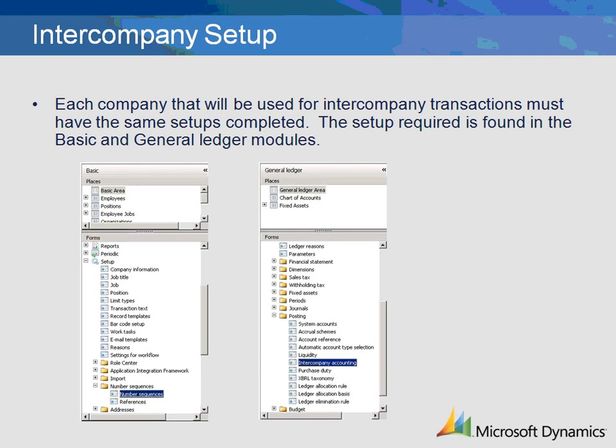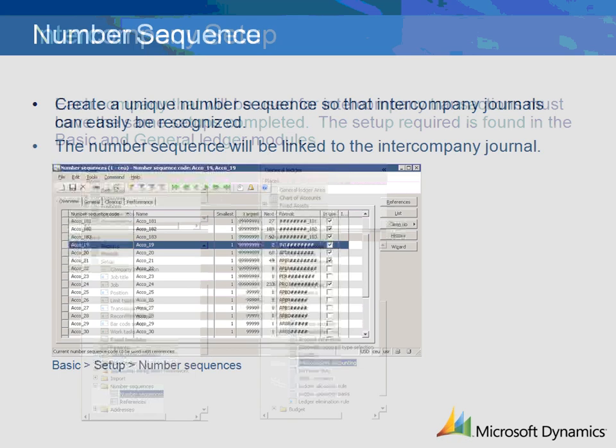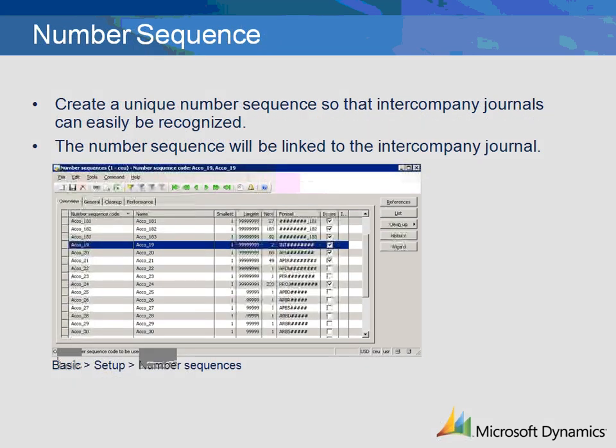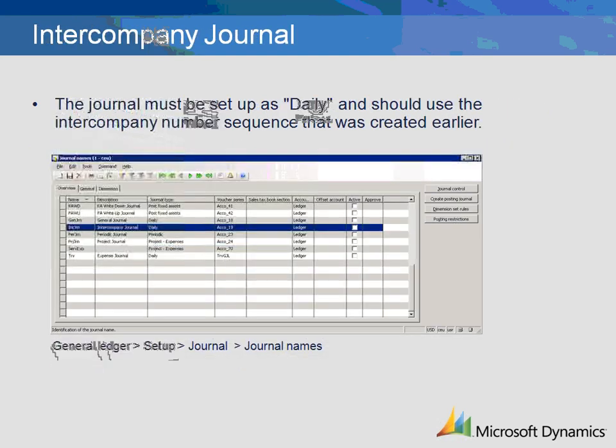Creating a unique journal and sequence number are not required, but they help to differentiate intercompany transactions. The standard general journal for daily transactions can also be used. Create a unique number sequence so that intercompany journals can easily be recognized. The number sequence will be linked to the intercompany journal. The intercompany journal name is created in General Ledger setup for journals, and must be set up as daily using the intercompany number sequence created earlier. The same journal name must be created in each company that will be processing intercompany transactions.